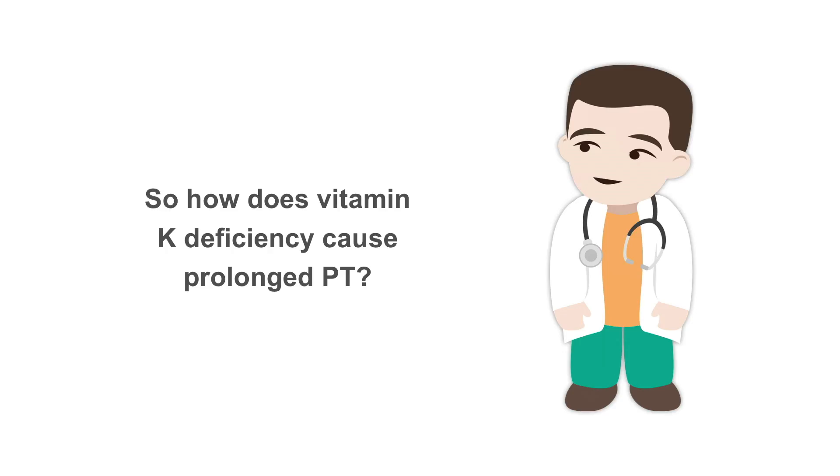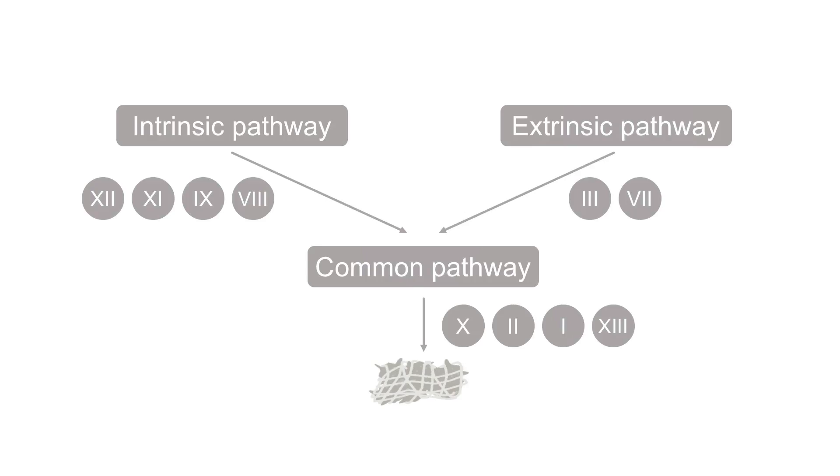So how does vitamin K deficiency cause prolonged prothrombin time? There are some clotting factors which are vitamin K dependent. With vitamin K deficiency, these factor levels will be low. Since factor VII has the shortest half-life, the manifestation of this deficiency is seen early and is persistent. Factor VII is part of the extrinsic pathway, and with a defect in the extrinsic pathway, the PT will be prolonged due to vitamin K deficiency.